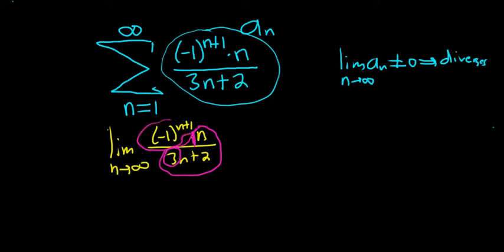However, this piece here is oscillating back and forth. So this limit in general will not exist. In this case, that means it's not equal to 0. So the series diverges by the n-th term test.